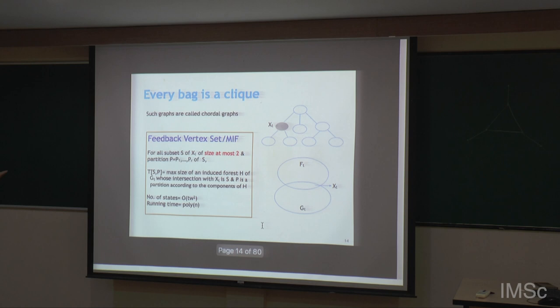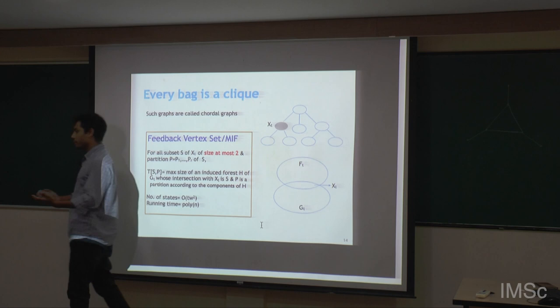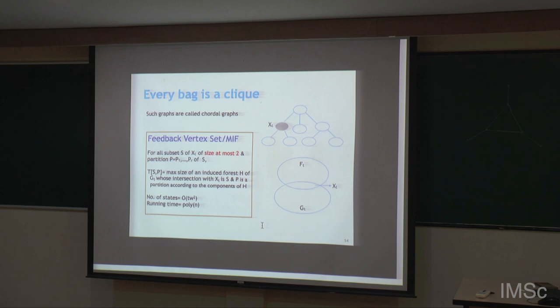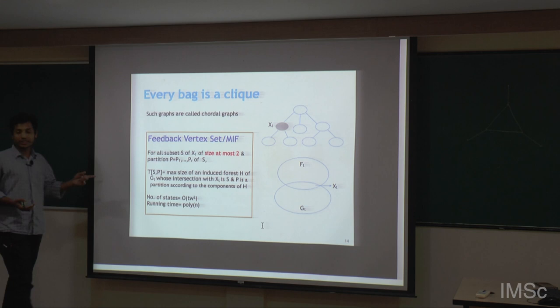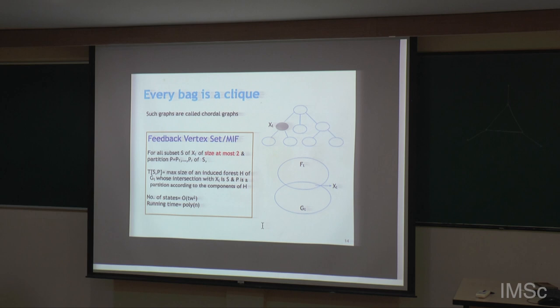Similarly for feedback vertex set: this bag is a clique, which means I need to pick all but at most two — I may leave out one or zero, but more than two I cannot leave out because there would be a triangle. That also leads to polynomial number of states, and hence a polynomial time running time.